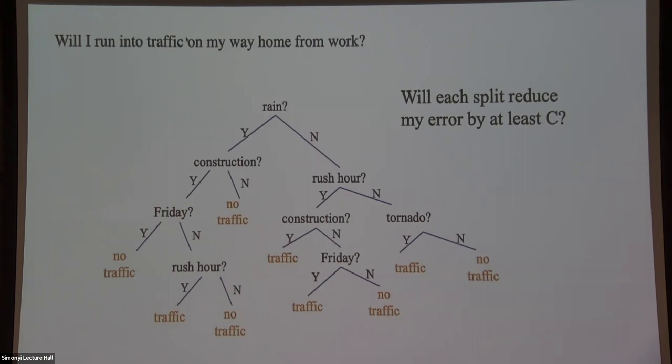Are there results showing that binary splits versus three-way splits achieve similar accuracy? One way of measuring complexity is VC dimension. For decision trees, the VC dimension is the number of leaves. You could take a dataset, calculate how many leaves are in potential trees, and that tells you the complexity of the different trees.